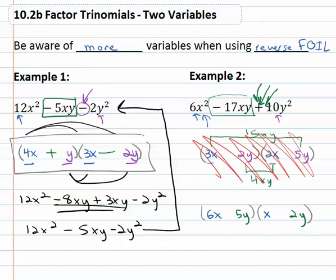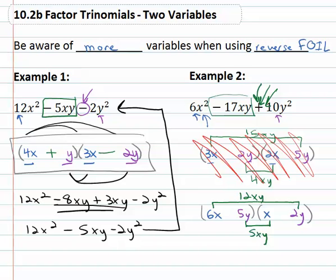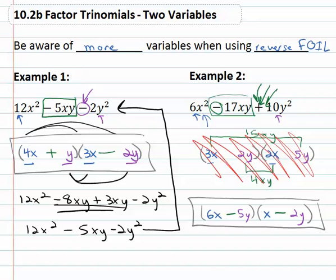Because we want a positive 10y², the signs are either both positive or both negative. On the outside, 6x times 2y is 12xy. On the inside, 5y times x is 5xy. Those add to 17xy — but we want a negative, so we'll make them both negative, so they both add to negative 17xy. We now have our solution: (6x − 5y)(x − 2y).